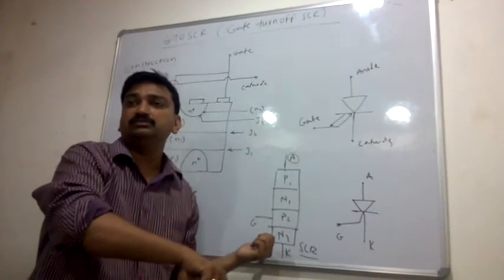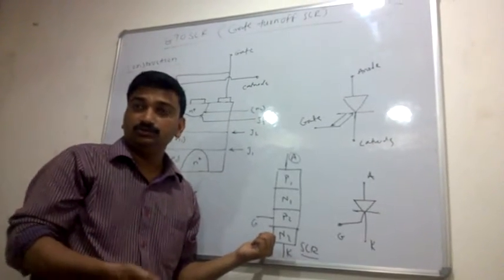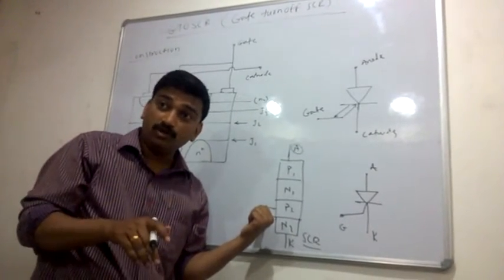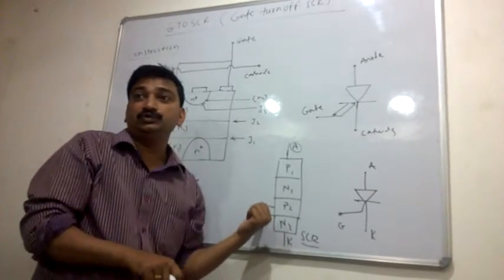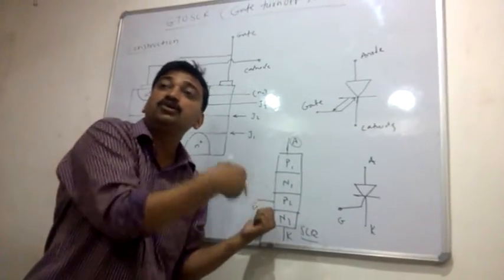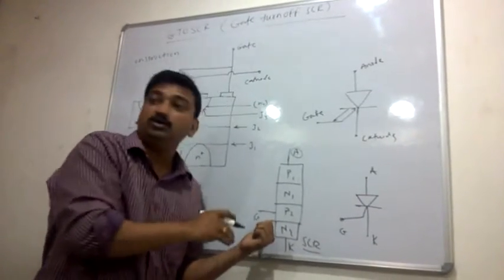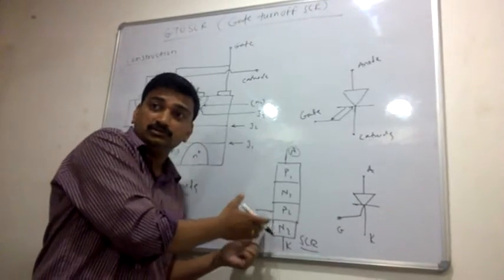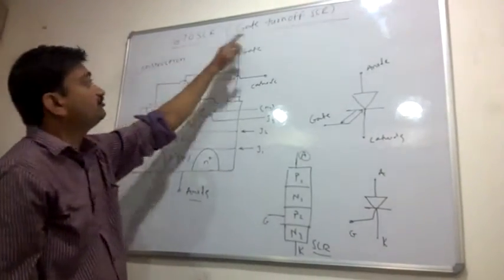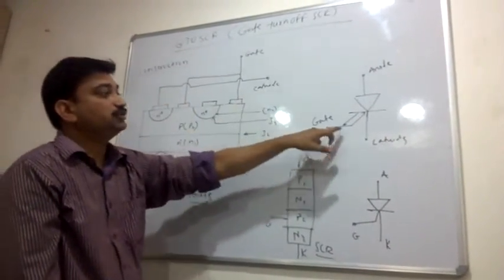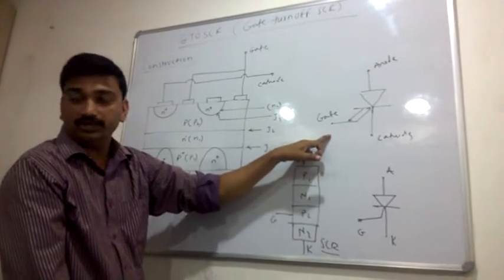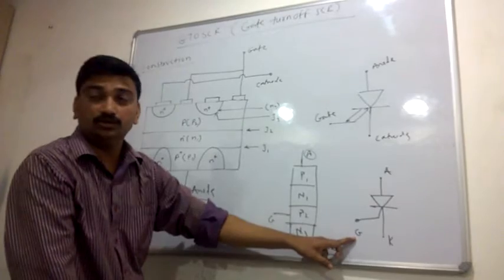Just like a bike — you require the ignition to turn off the bike, and you cannot use the kick to turn off the bike. The same way, in SCR, the gate is only used to turn on the SCR. If you want to turn off the SCR, there are different methods — you cannot use the gate to turn off the SCR. To convert the SCR into a gate turn off device, the gate is used for both turn on and turn off, which is why the symbol shows a bi-directional arrow.